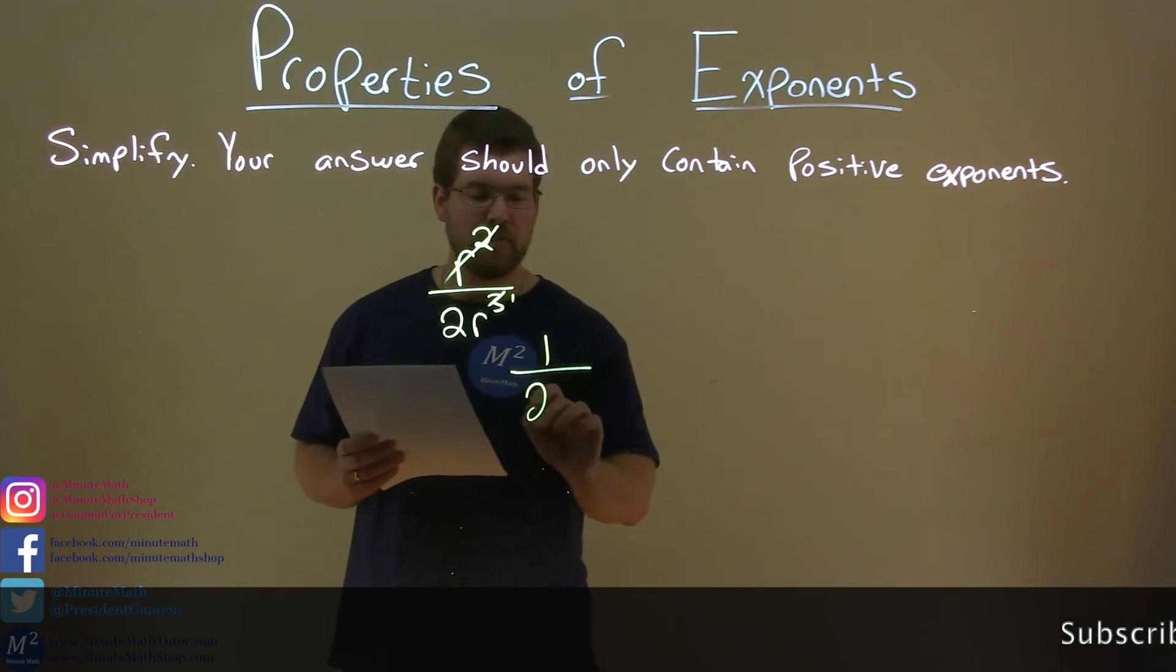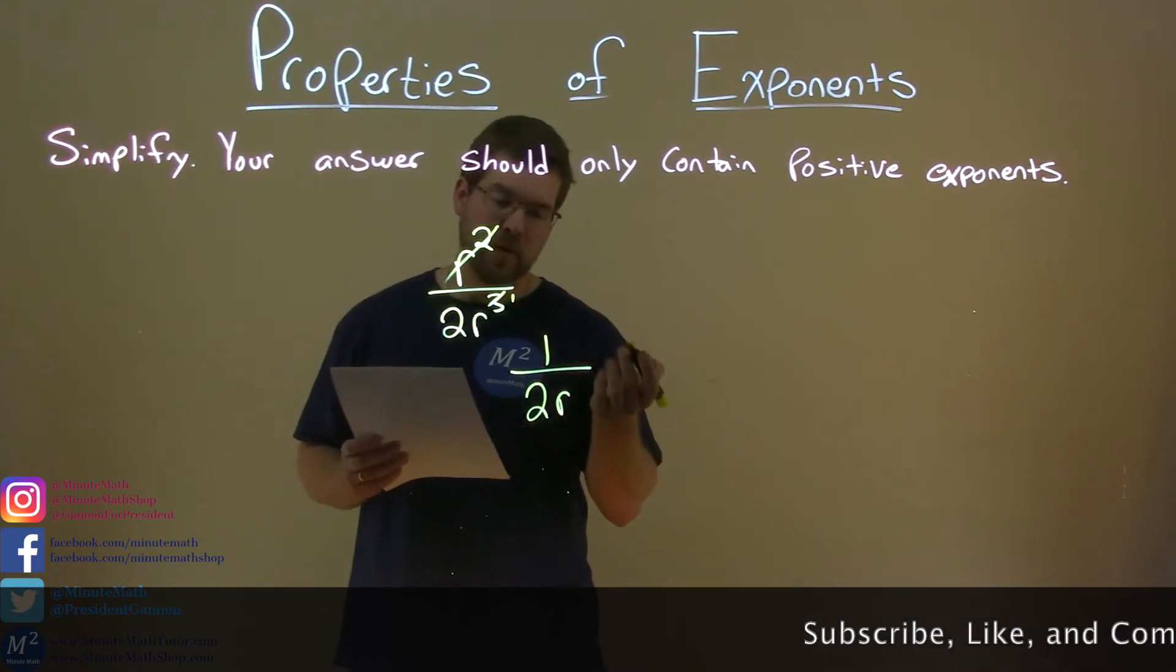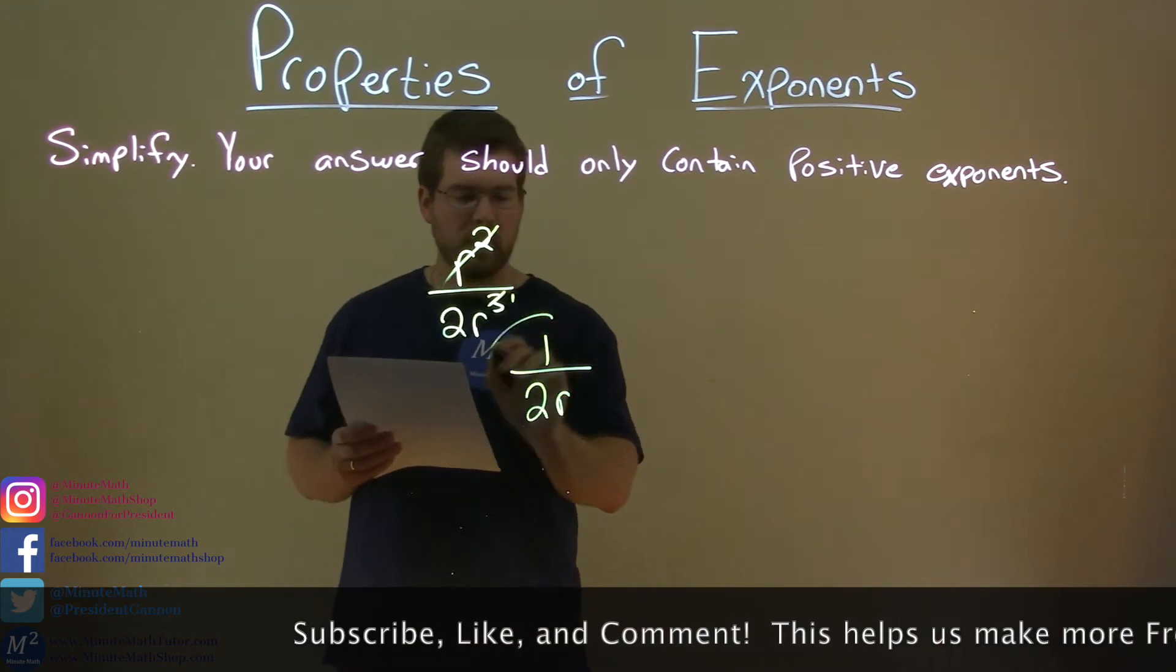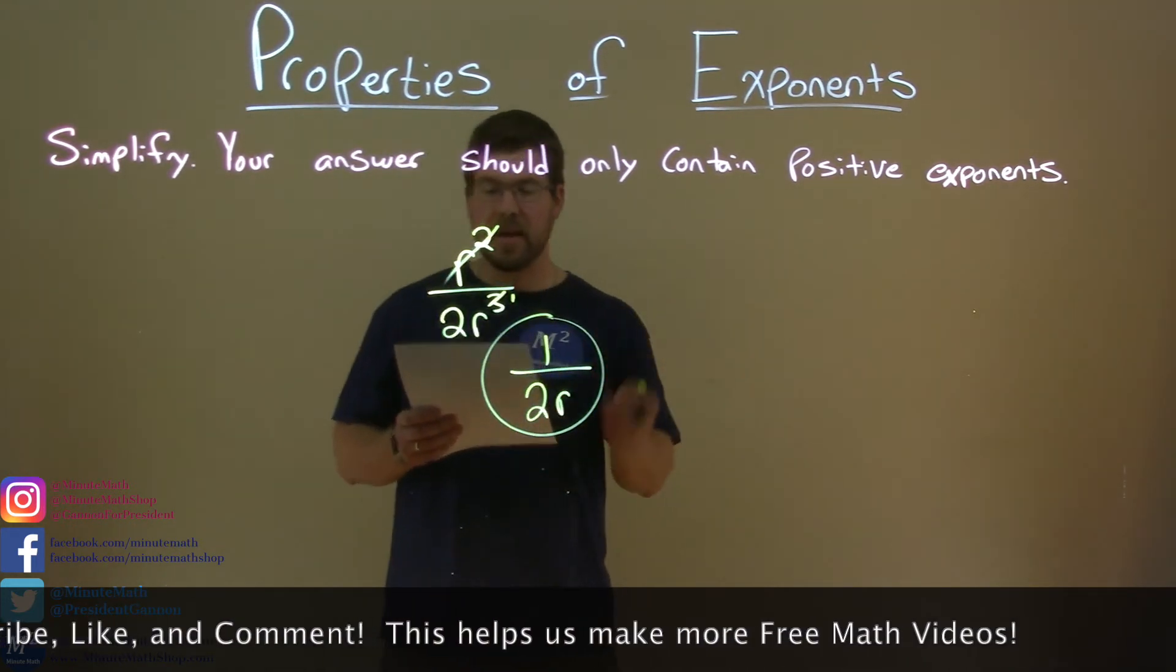We're left with 1 in the numerator, and we have 2 to the r to the first power in the denominator, but we don't need to write the first power. So we have 1 over 2r as our final answer.